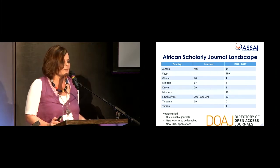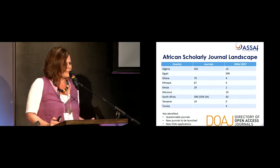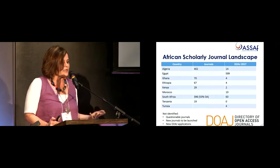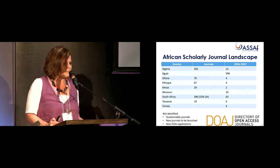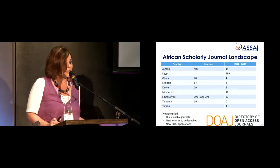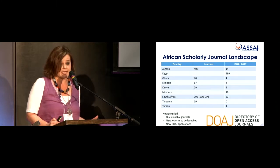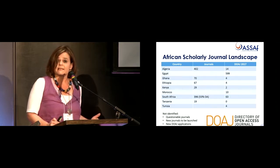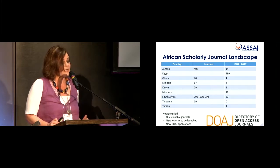In terms of open access scholarly journals, most journals are still only available in print, but there are countries such as Algeria, Egypt — which has quite a number of online journals registered in the Directory of Open Access Journals — Ghana, Ethiopia, and after Nigeria, South Africa has the most open access journals published in the DOAJ. In total, in South Africa we have 396 scholarly journals, of which 53% are available as open access. Over the past few years we've seen a gradual increase and move towards open access.